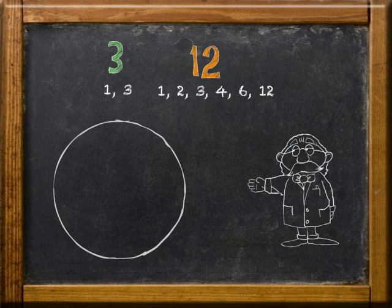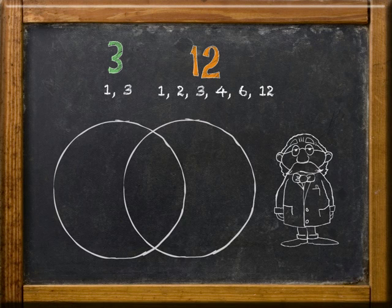A Venn diagram has two or more overlapping circles. It is often used in mathematics to show relationships between groups or sets of numbers.